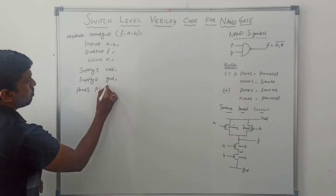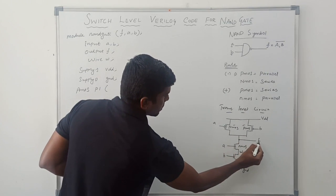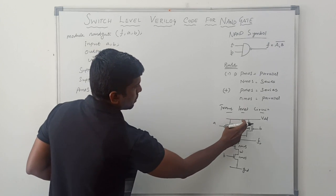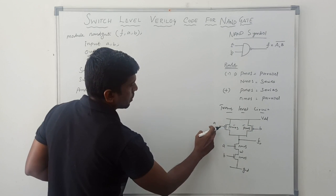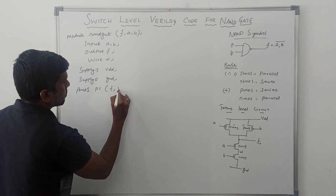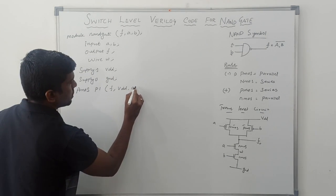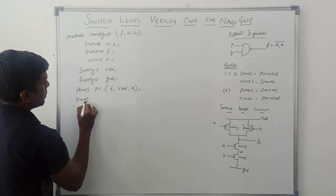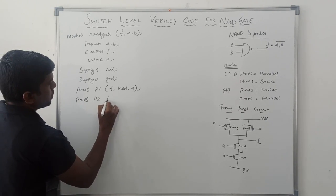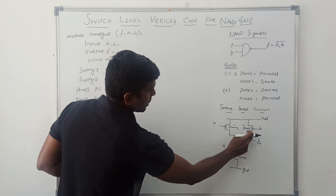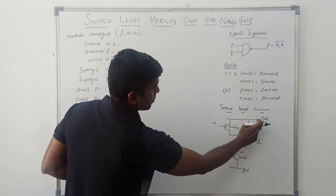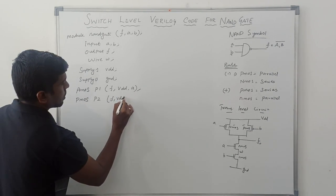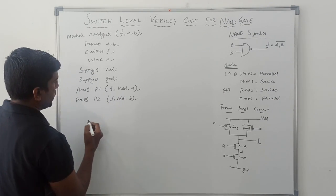PMOS P1. Output is F. One input is VDD and controlling input is A. Then, consider second PMOS transistor P2. Output for this transistor is F. Input is VDD and controlling input is B.